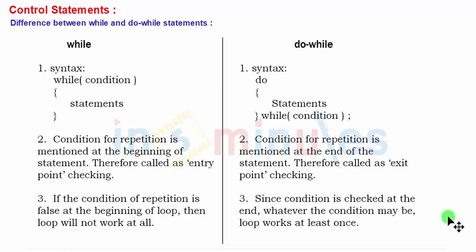The condition for repetition is mentioned at the end of the statement in case of do-while statement, so it is called exit point checking. The program will enter the do statement, work with statements once, and then while going out of the statement, the condition checking is done. If that condition is found true, then obviously it will repeat. So it is called exit point checking.